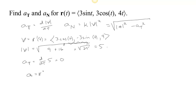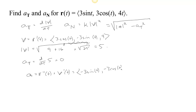The acceleration is r double prime of t, or equivalently v prime of t. We've already calculated v, so v prime gives us minus 3 sin t, minus 3 cos t, and 0.